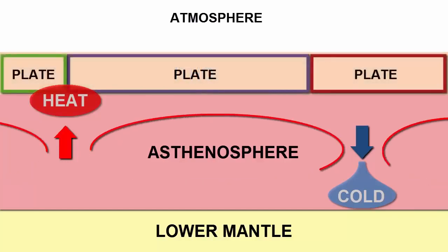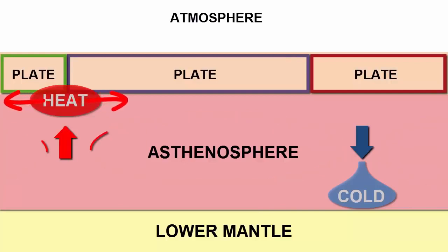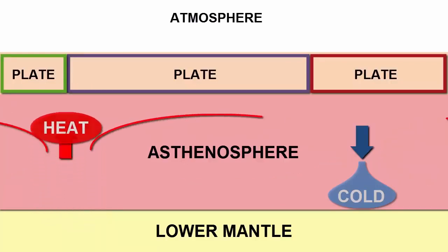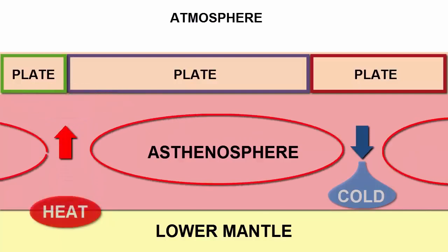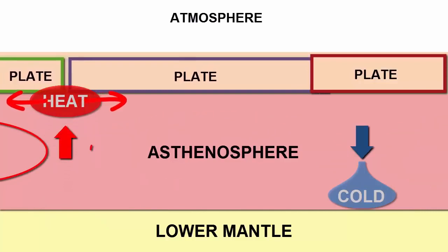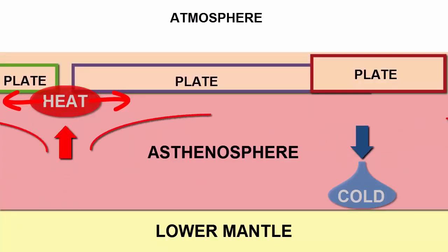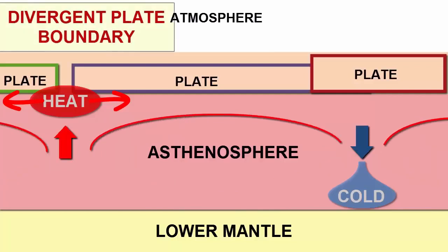It causes the lithosphere to break into pieces we call plates. Where heat rises, material must be pushed away in opposite directions to make room for the continual rising of new hot material, much like boiling water. That drags on the lithosphere above and causes it to stretch, thin, and break apart. On the surface, we call the zone where two plates are moving apart a divergent plate boundary.